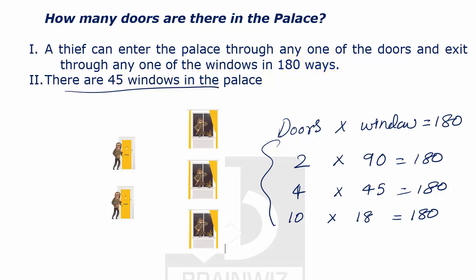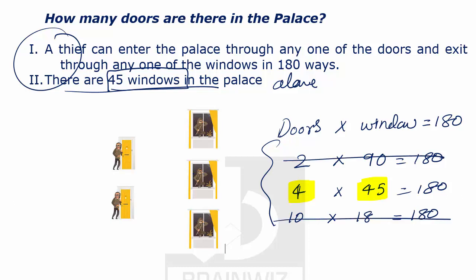Statement two alone is also not sufficient, but if we use statement two along with statement one, we can conclude that there are 45 windows. When there are 45 windows, that means there are 4 doors — all other cases are not valid. So the number of doors is 4 and the number of windows is 45, as 4 × 45 = 180. Therefore, there are four doors in the palace.